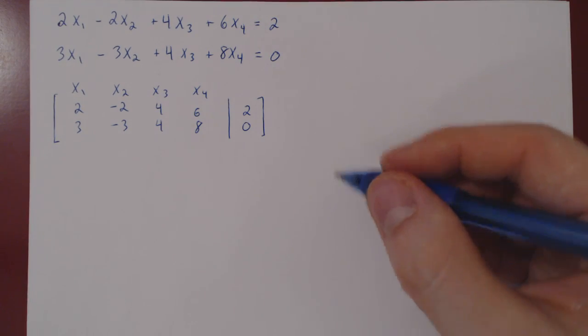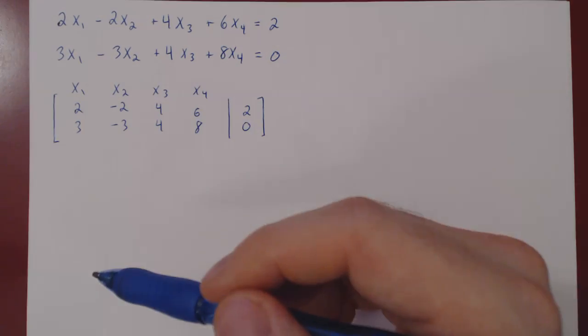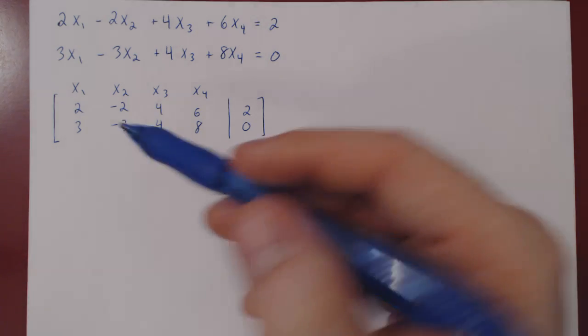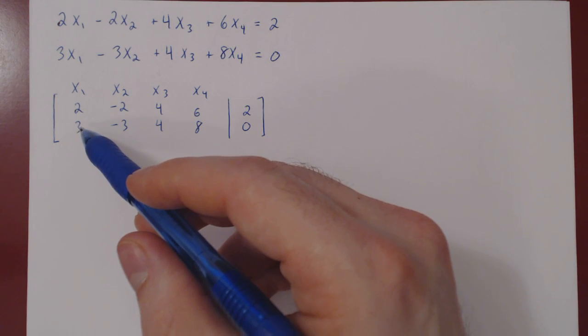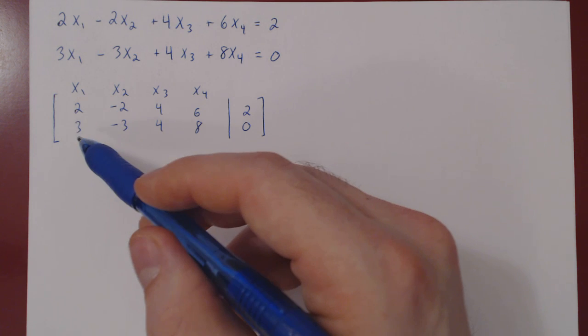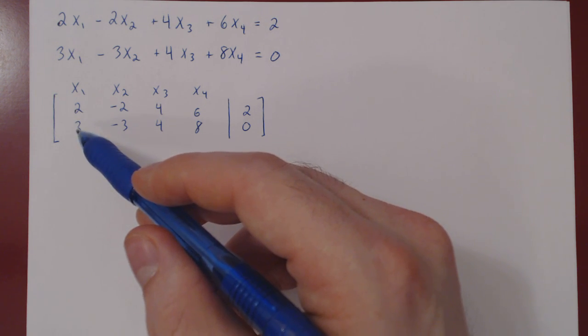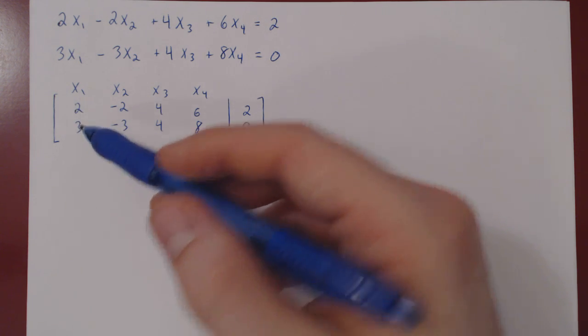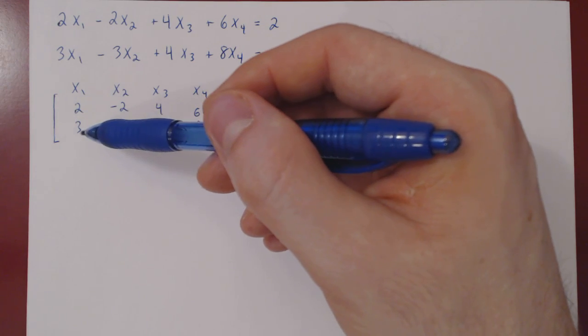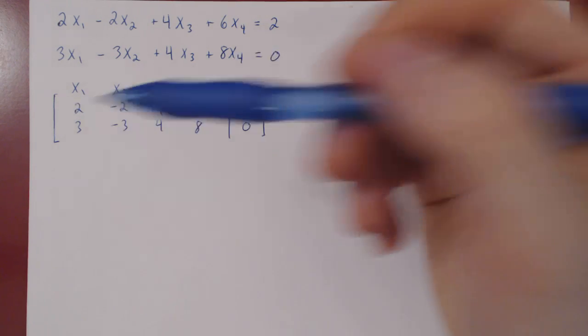And we'll try and get, in the leftmost column, a leading one in the top row. Now, if you notice, this is a trick we've used before. We could here do row 2 minus row 1, because 3 minus 1 is 1, 3 minus 2 is 1. Now, by swapping the two rows, we would get a leading one in the top row.